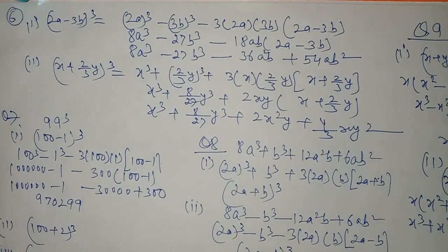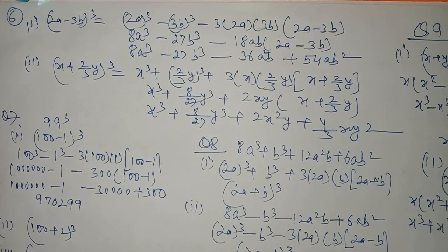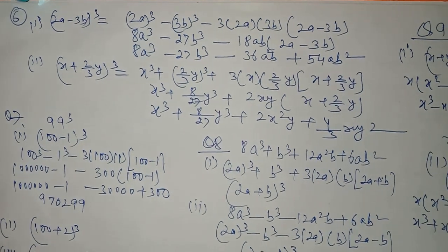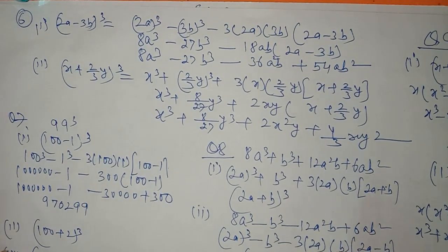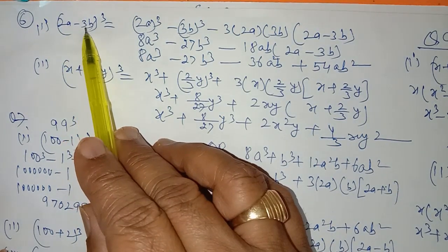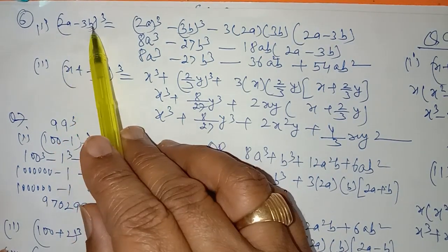Hello, this is lecture number 8 for class 9th mathematics. We were discussing Exercise 2.5, and in the last lecture we completed up to question number 5. Now we are starting with question number 6. We have to find the whole cube of 2a minus 3b.